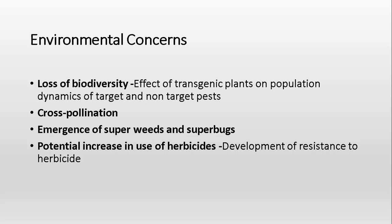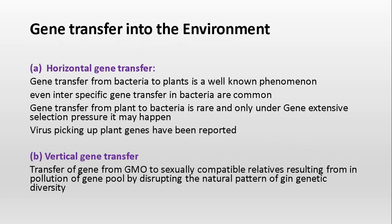Next is the potential increase in use of herbicides and development of herbicide resistance. Gene transfer into the environment is also a very major issue. Gene transfer can be of two types: horizontal gene transfer or vertical gene transfer. Horizontal gene transfer occurs from bacteria to plant or from plant to bacteria. When a virus affects a plant, it can pick up plant genes into the capsid — these kinds of gene transfers are called horizontal gene transfer and are a well-known phenomenon.